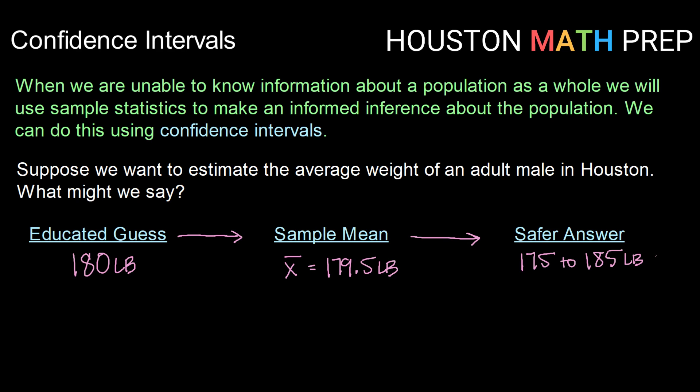So now instead of giving a single value, we're giving a range of possible values. And that give or take five pounds is sort of giving us a symmetric interval. We're basing it upon our educated guess or our sample mean of about 180, and we're going up and down by about the same amount. So this safer answer here, this is a confidence interval. Now, of course, we're not going to just make up values out of thin air. We're going to be basing this upon data and upon a particular method. So let's get into that.